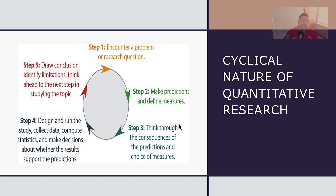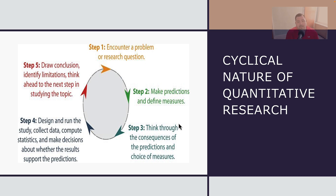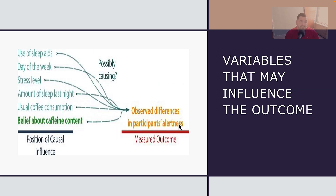Once they make that educated guess, they need to think through the pros and cons of that hypothesis and decide how they're going to move forward to actually test it and verify whether it is correct or to be refuted. This is step four on the slide. The researcher then needs to design an appropriate experiment, run the study, collect the data, compute the statistics, and interpret the findings. In step five, the researcher disseminates — explains and tells the public — what they found, and identifies new problems that may need to be addressed in future studies.